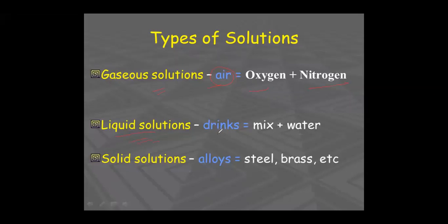Another type is liquid solution — for example, various kinds of drinks. If you make lemonade, you mix ingredients into water, giving a liquid solution. There are also solid solutions — these are alloys, which are mixtures of two or more metals or non-metals. Steel and brass are examples of alloys, making them solid solutions.